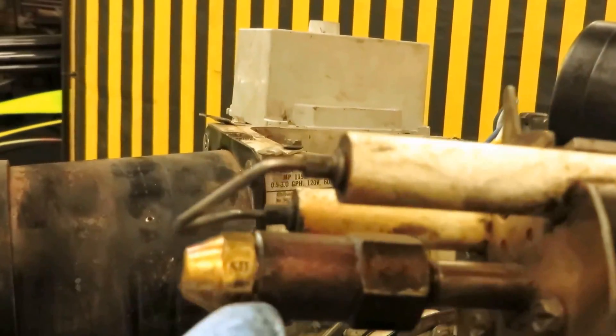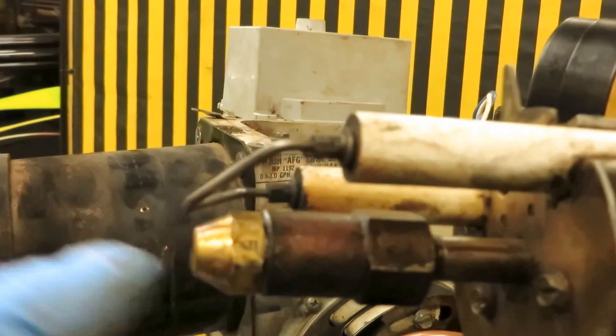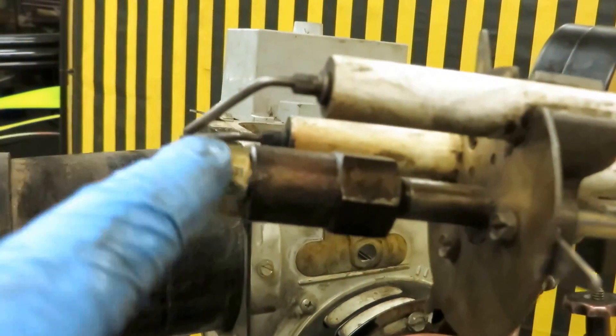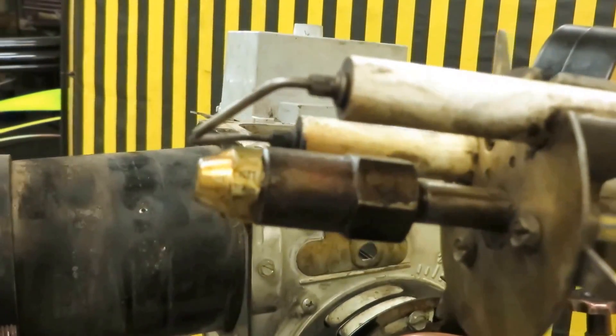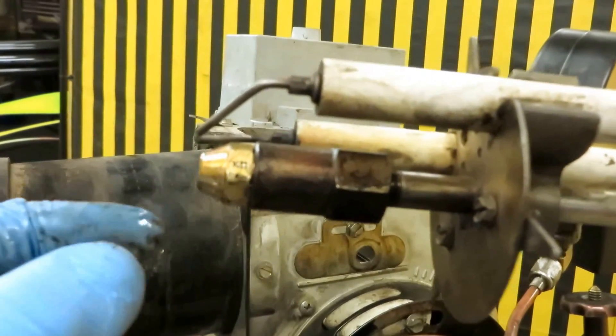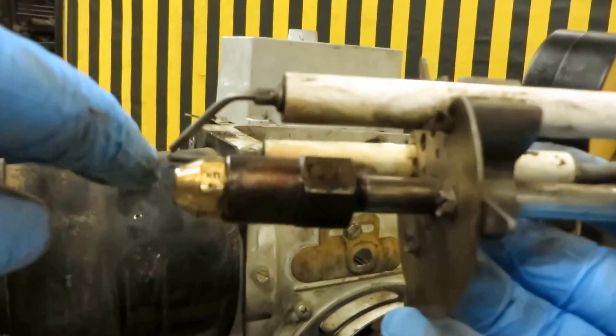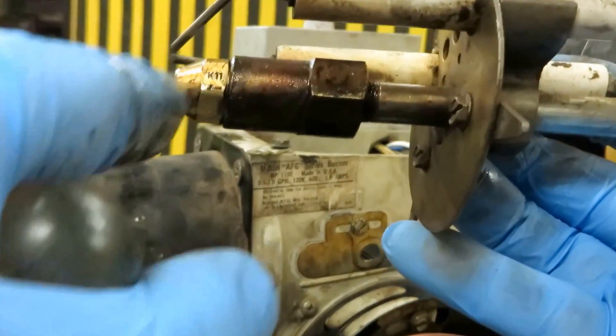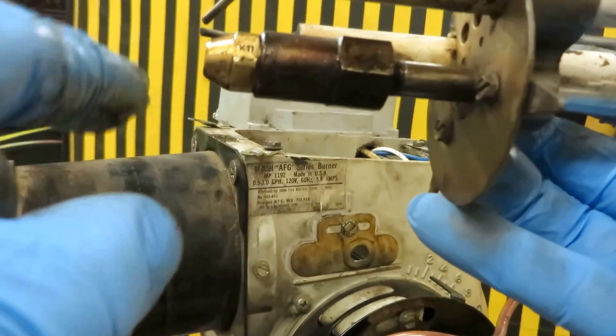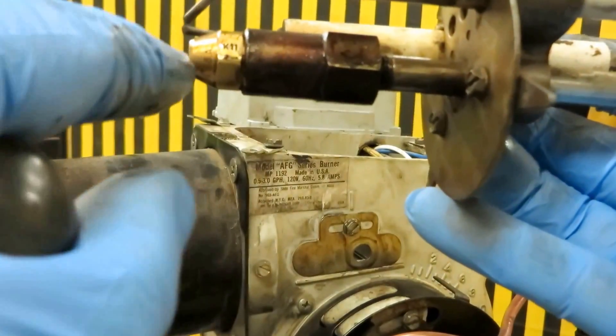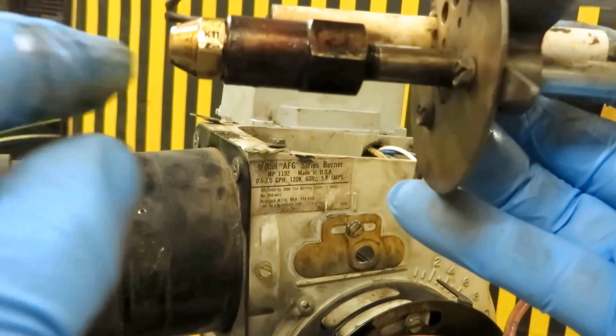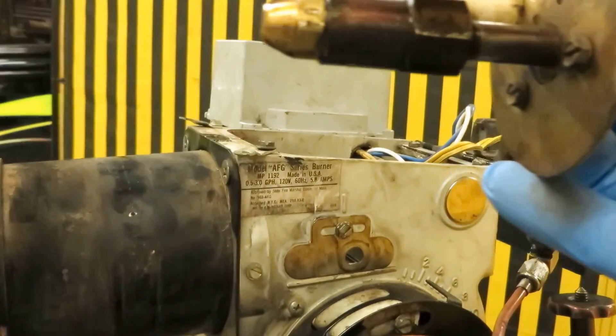Now on the nozzles here, there's different angles and different gallons per minute. An 80 degree nozzle, you're going to have more of an angle like this. A 45 or 60 degree nozzle will have less of an angle, but that's made for a long chamber.